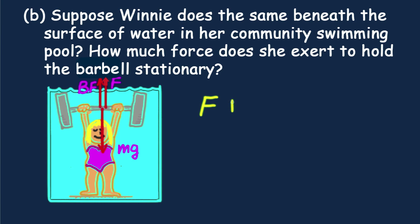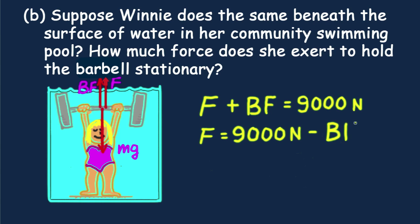We see that the upward force plus the buoyant force equals the barbell's weight, Mg, which we have found to be 9,000 newtons, which means that the force she exerts is F = 9,000 newtons minus the buoyant force. So we've got to find the buoyant force that acts on the submerged barbell.